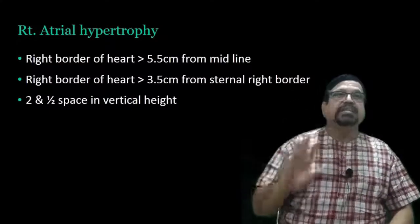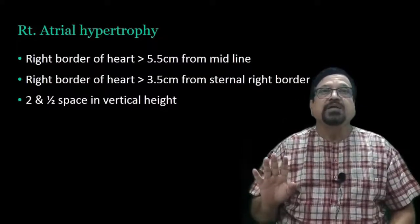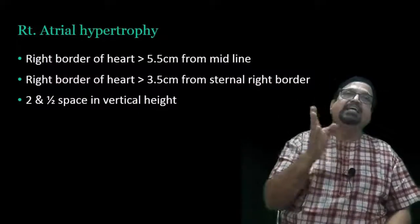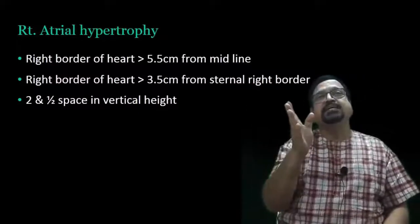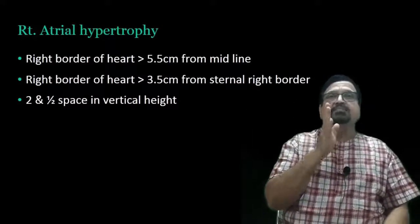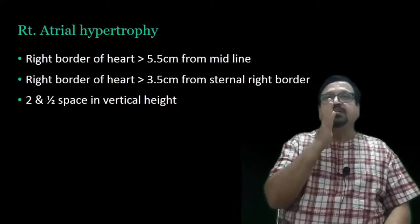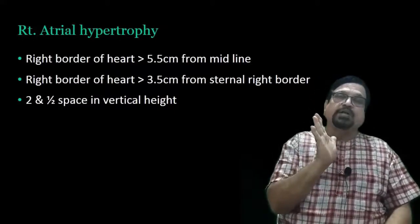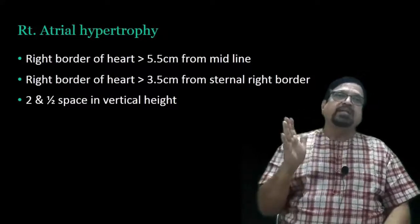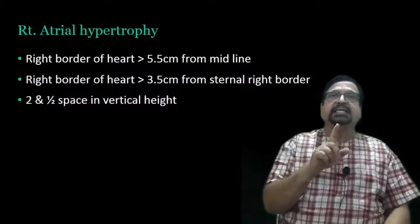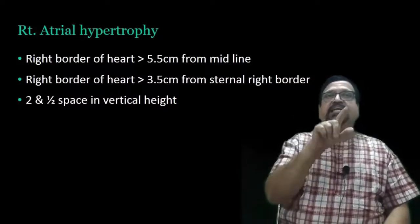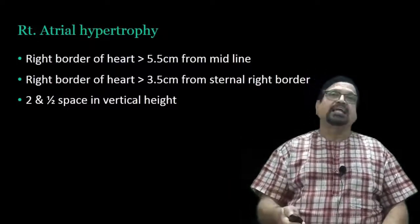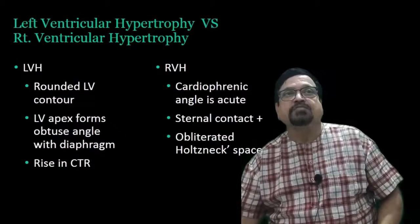Left atrial hypertrophy - right border of the right atrium and right border of the heart. The distance from the right border should be within two and a half inches between vertical heights. These are criteria for atrial enlargement. Left ventricular hypertrophy versus right ventricular hypertrophy - often we see this question. The question is whether the pathology is on the left side involving valvular disease or lung disease.